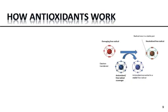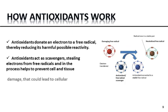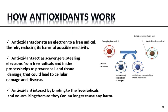How do antioxidants work? Antioxidants donate electrons to free radicals, thereby reducing their harmful reactivity. Antioxidants act as scavengers, stealing electrons from free radicals, and in the process help to prevent cell and tissue damage that could lead to cellular damage and disease. Antioxidants also interact by binding to free radicals and neutralizing them so they can no longer cause any harm. This figure shows how antioxidants act as free radical scavengers and convert them into stable molecules.